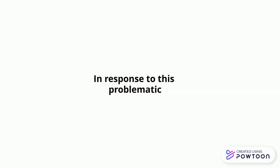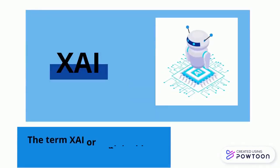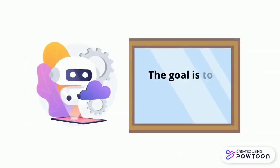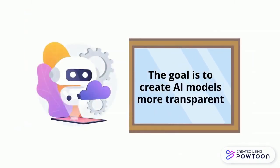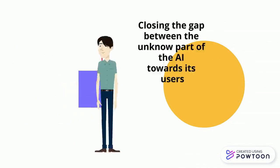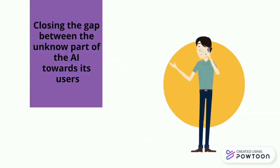In response to this problem, the term XAI, or Explainable AI, has emerged. The goal is to create AI models that are more transparent, allowing us to see what the AI sees — closing the gap between the unknown part of AI and its users.